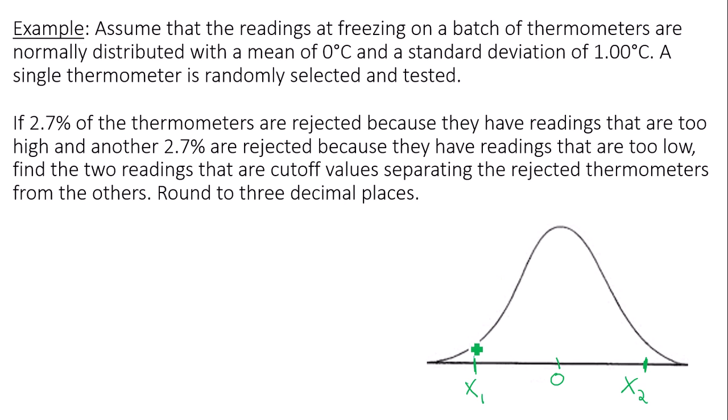So what I know is that the area to the left of my first cutoff value is 2.7%. And then the area to the right of my upper cutoff value is 2.7%.